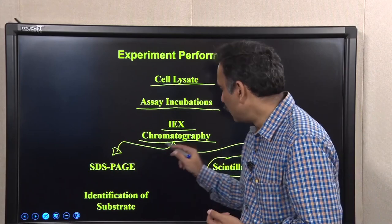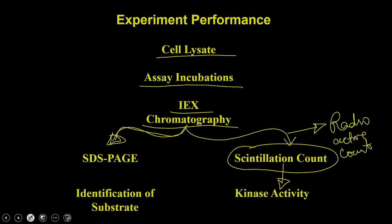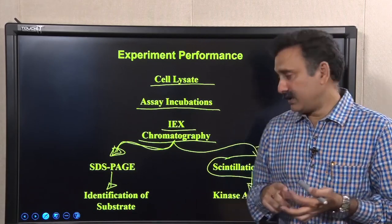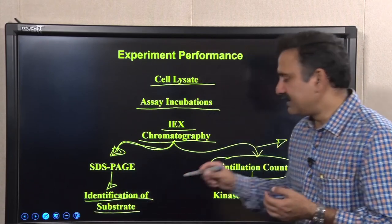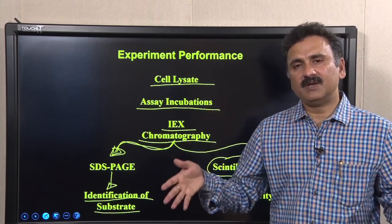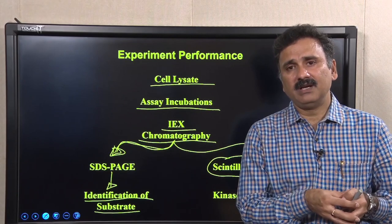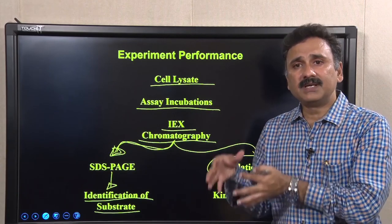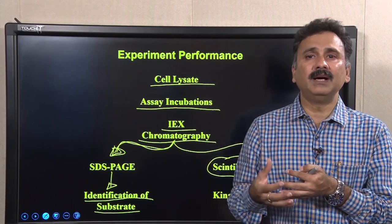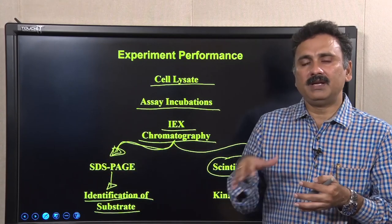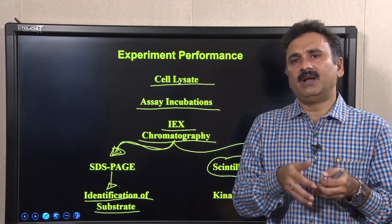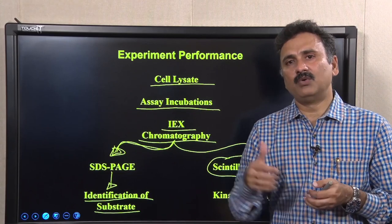The flow-through can be analyzed in two ways: collect radioactive counts in the scintillation counter to measure kinase activity, or run it on SDS-PAGE followed by autoradiography or western blotting to identify the specific phosphorylated substrates. Starting from a single experiment, you can diverge into multiple experiments to get two pieces of information: the total kinase activity of the cell lysate and the identity of the substrates phosphorylated by these kinases.